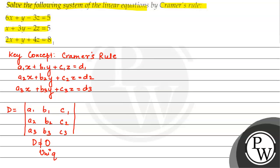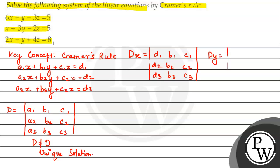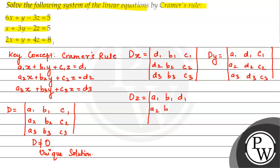When D is not zero, it means there will be a unique solution. To find x, y, and z, we calculate three determinants. Dx has elements D1, B1, C1 then D2, B2, C2 and D3, B3, C3. Dy has elements A1, D1, C1 then A2, D2, C2 and A3, D3, C3. Dz has elements A1, B1, D1 then A2, B2, D2 then A3, B3, D3.